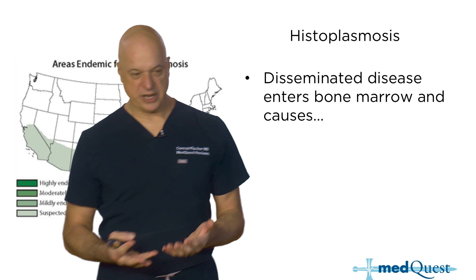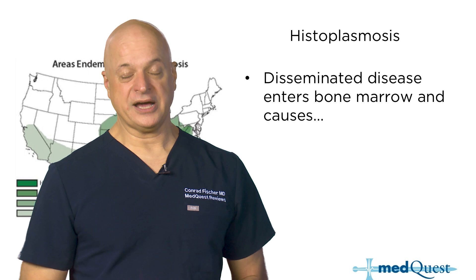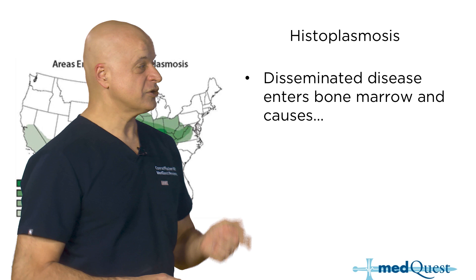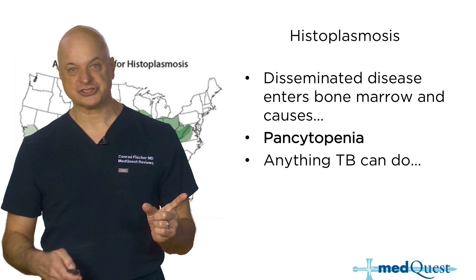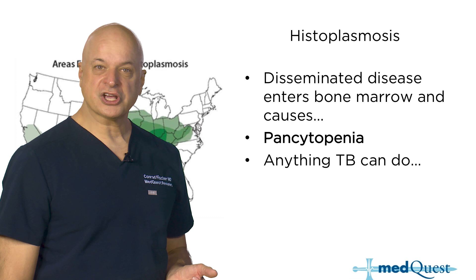Cryptococcus for us is primarily a cause of meningitis in people with AIDS. But HIV-negative people can get crypto — they just don't know it most of the time. They get a viral syndrome and it gets better on its own. It's only in HIV-positive people that it disseminates into the brain. Histo goes to the bone marrow; the others don't cause pancytopenia. In the lung, anything TB can do, histoplasmosis can do — cavitate, cause adenopathy.